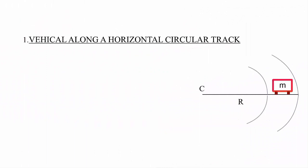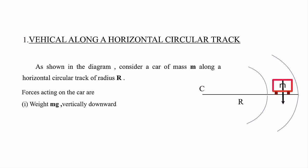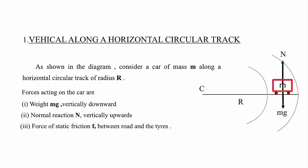In the first application, we will study motion of a vehicle along a horizontal circular track. As shown in the diagram, consider a vehicle of mass M moving along a circular track of radius R, where C is the center of the circular track. The three different forces acting on the vehicle are its weight Mg vertically downward, normal reaction N vertically upward, and force due to friction between the tires and road surface.